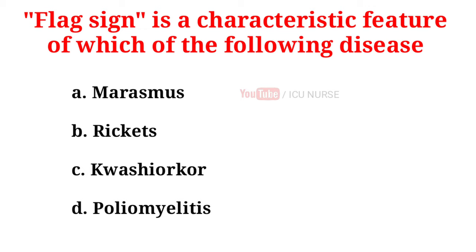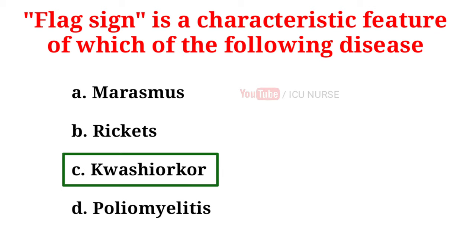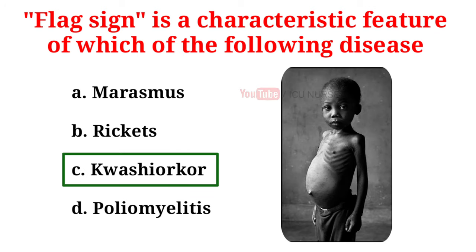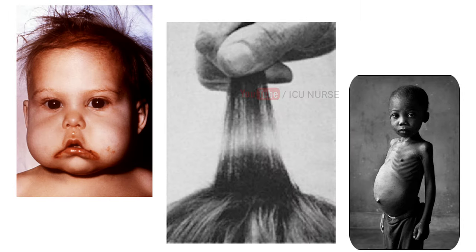Flag sign is a characteristic feature of which of the following disease? A. Marasmus, B. Rickets, C. Kwashiorkor, D. Poliomyelitis. And the correct answer is C. Kwashiorkor. Bands of discoloration of hair — reddish, blonde, or grey depending on original colour — resulting from fluctuations in nutrition, is the characteristic of Kwashiorkor.